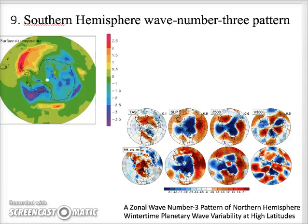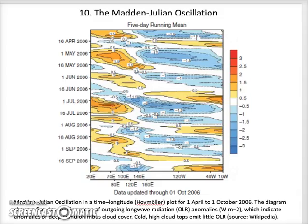This wave number 3 pattern is one commonly associated with blocking patterns in the Southern Atmosphere during summer, over November to March. Anomalies over the three continents occur out of phase with anomalies over the subtropical oceans, in a wave number 3 pattern over the Southern Ocean near 55 degrees south.